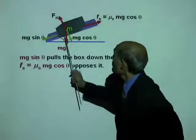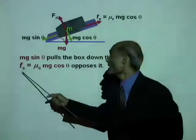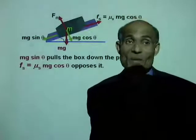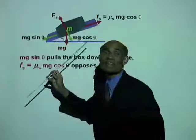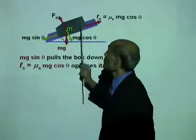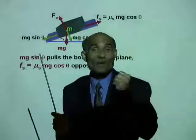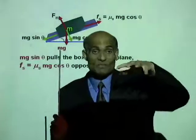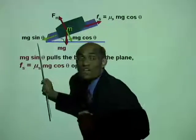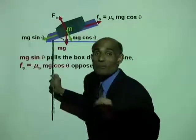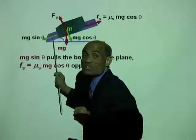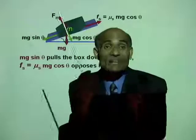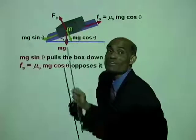mg sin theta pulls the box down the plane, and Fs equal to mu S times mg cos theta opposes it. Now, what happens when you increase the angle of inclination? Will Fs increase? No. The force of static friction will not increase — that is a limiting force. But as theta increases, mg sin theta will increase, and a time will come at a particular angle where mg sin theta will be exactly equal to Fs, which is mu mg cos theta. At that time, there will be no net force on the box.